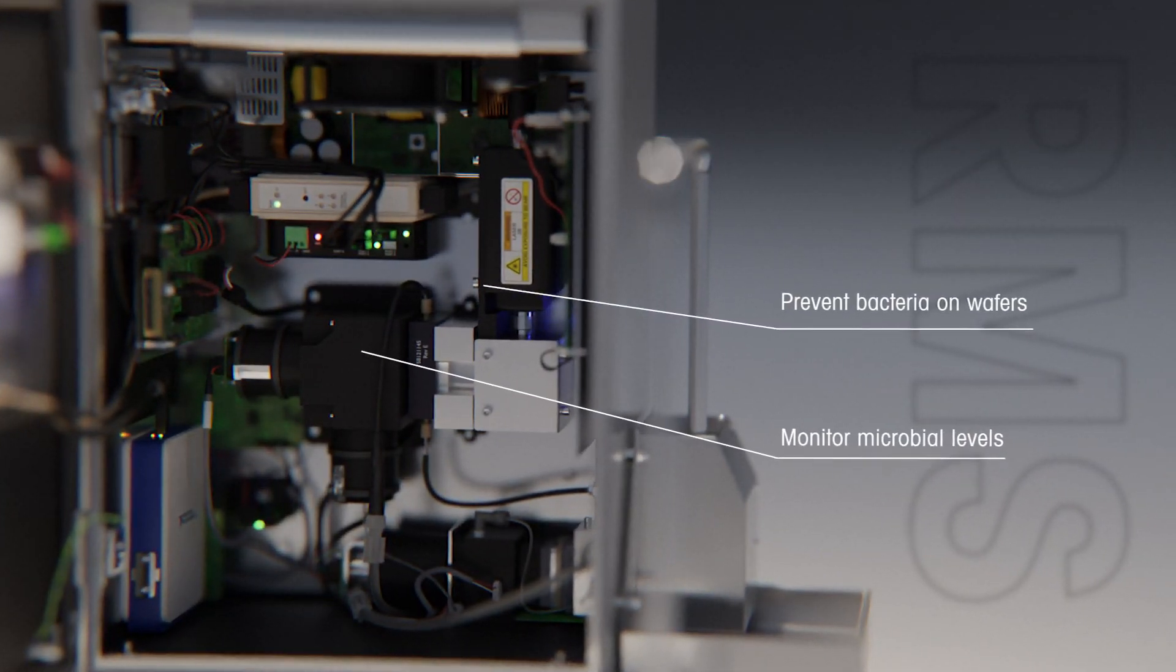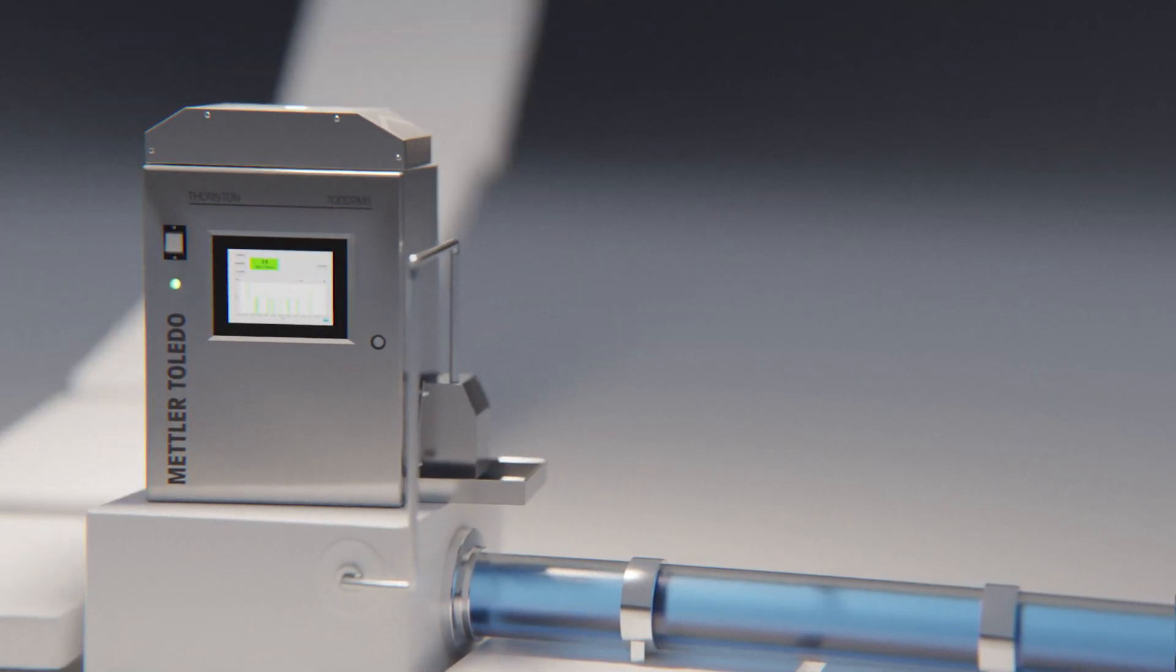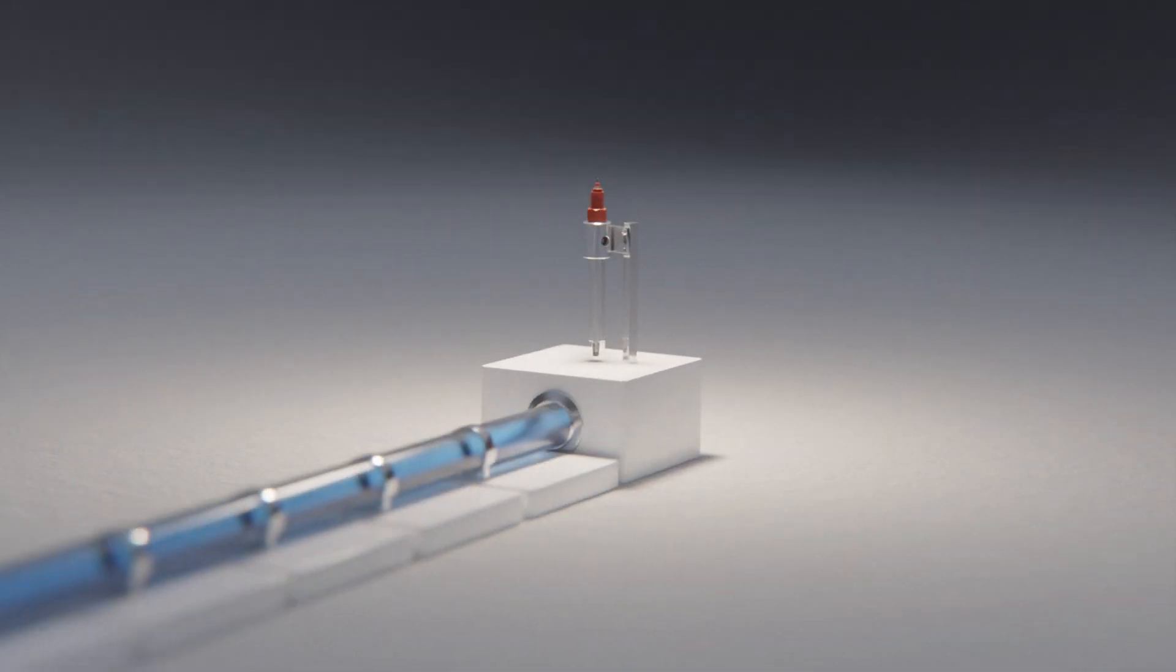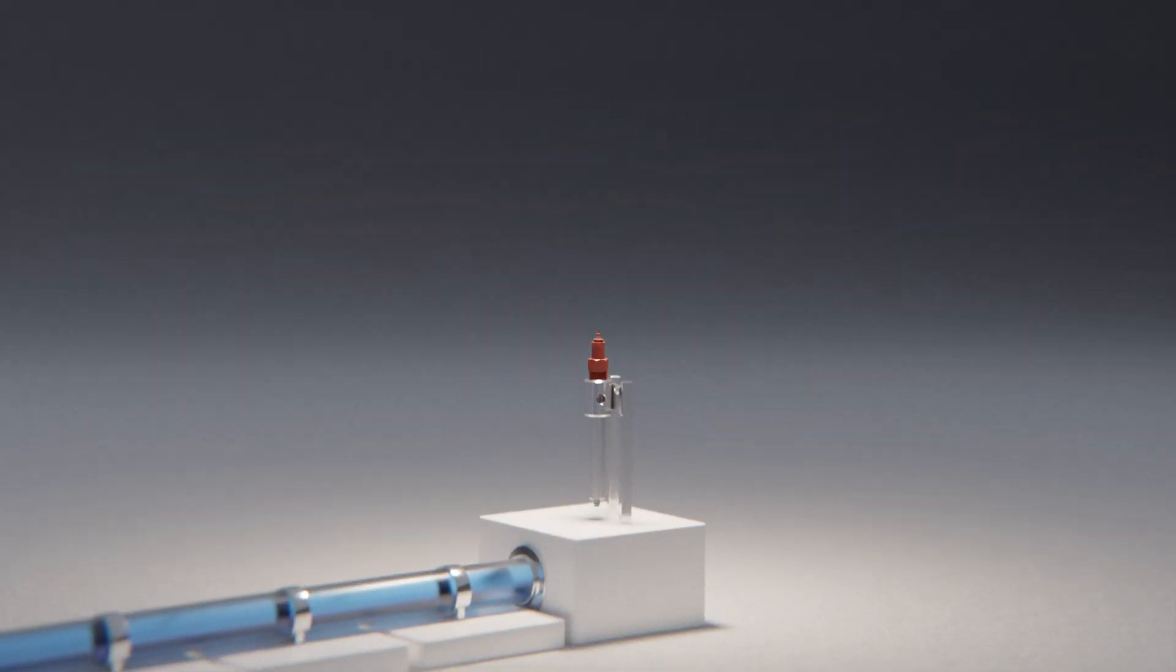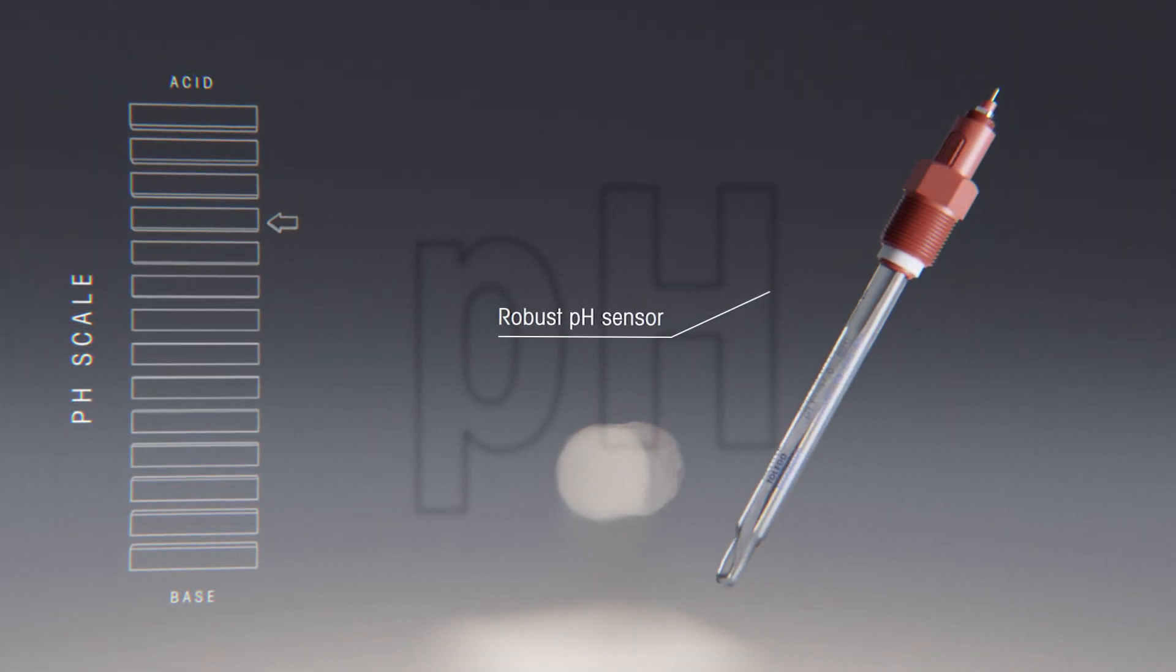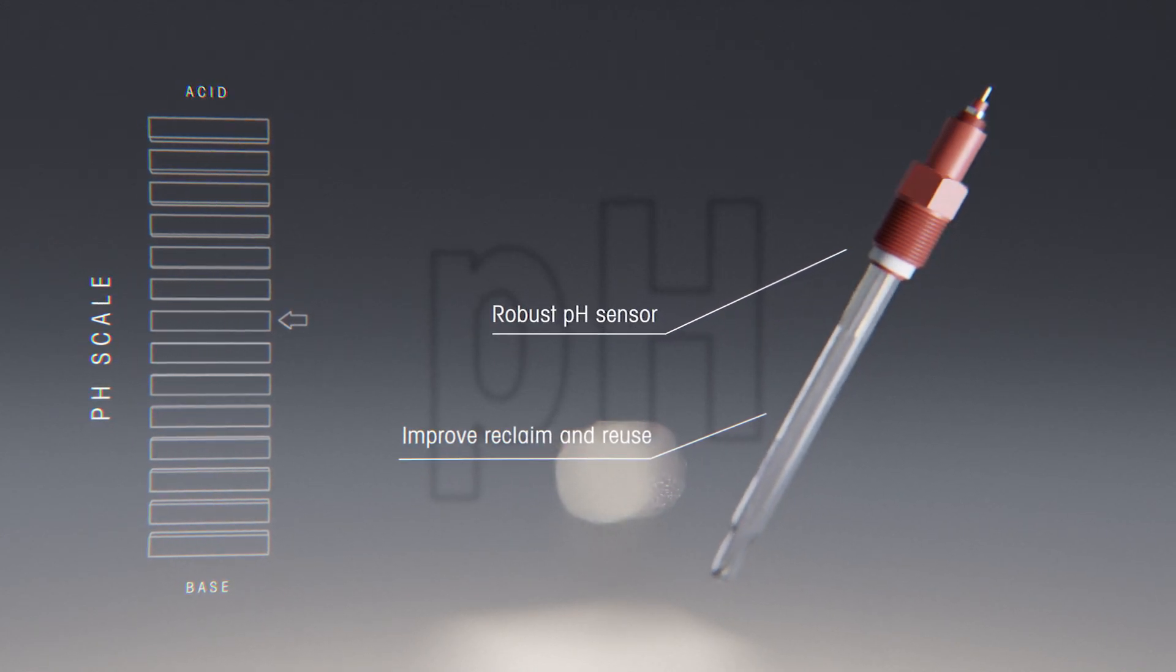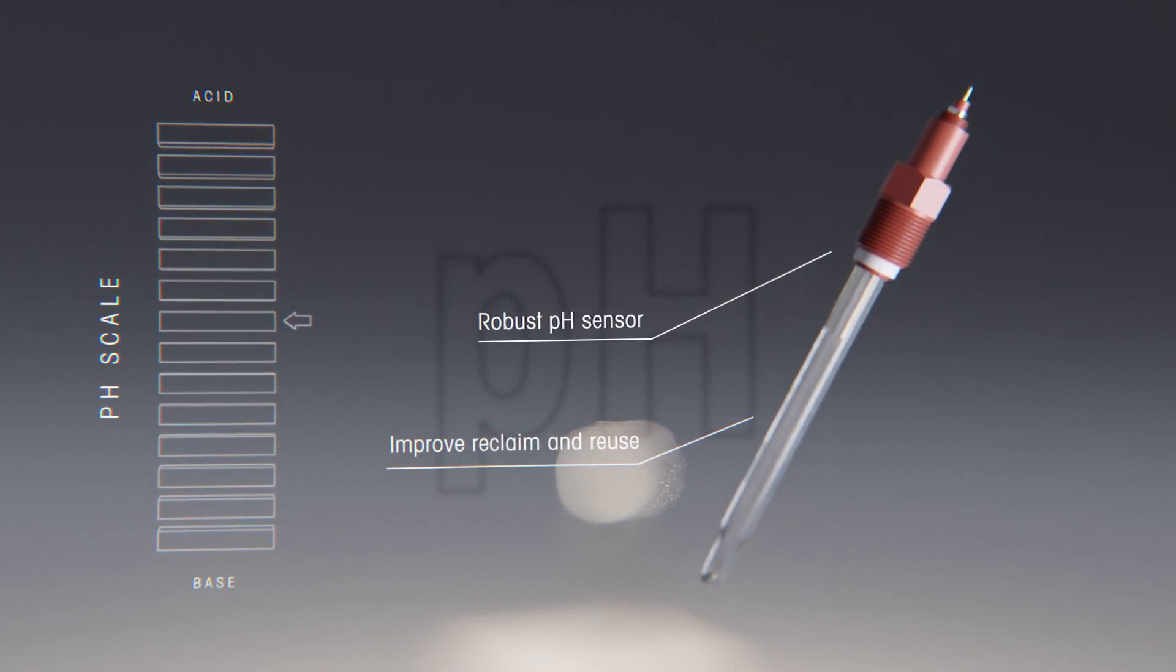When it comes to reclaiming and reusing water, waste streams from production areas contain a variety of chemicals that must be neutralized or removed before the water can be treated further. Hydrofluoric acid is used in several wafer processing steps, and the neutralization of HF wastewater requires a pH sensor robust enough to handle the acidic and corrosive conditions.